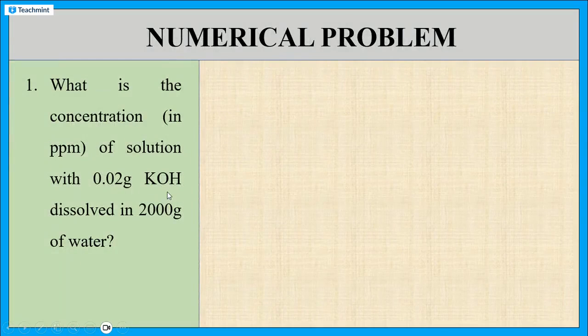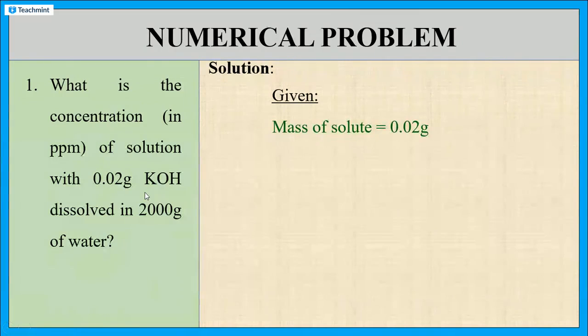In this problem, mass of the solute is given. Here, the solute is potassium hydroxide and the solution is water. The mass of the solute is 0.02 gram. Also, mass of the solution is given. It is 2000 gram.